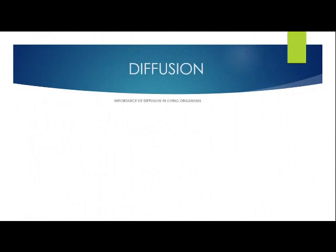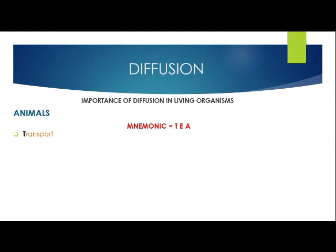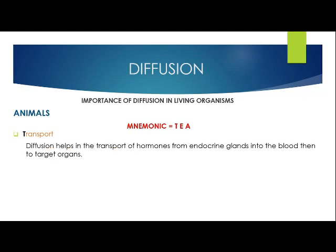Next, let's look at the importance of diffusion in animals. We'll still be using the mnemonic TEA. T is for transport — diffusion helps in the transport of hormones from endocrine glands into the blood and then to target organs. Without diffusion, people could not experience hormonal effects.